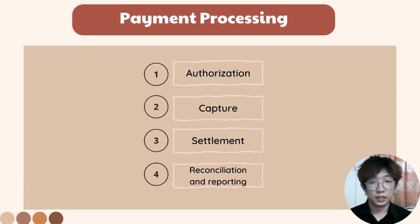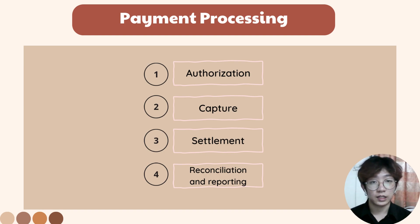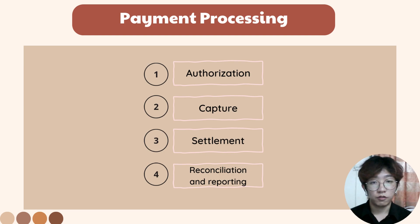For payment processing, there are several steps. First, authorization — we send the payment data to the payment gateway or merchant service provider for permission after the consumer places the purchase. Second, capturing — where we withdraw the money from the customer's account. Third, settlement — where the payment processor moves funds from the customer's account to our authorized merchant account. Fourth, reconciliation and reporting — where we compare the transactions handled by the payment processor to the sales data on file.